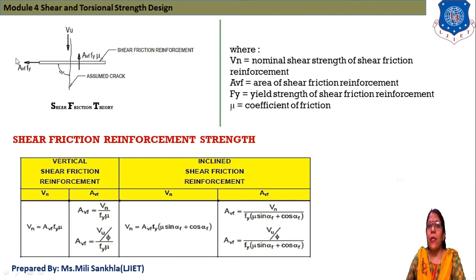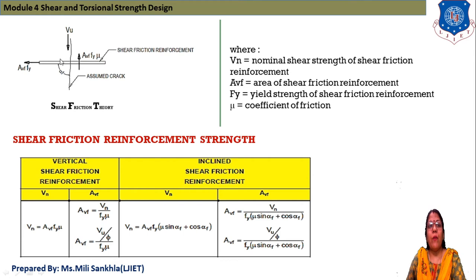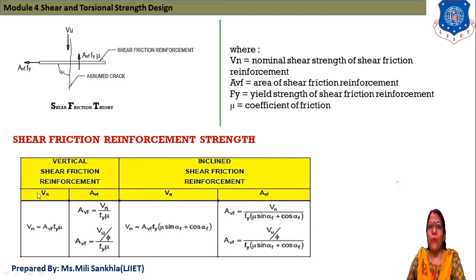The section is subjected to shear force Vf acting downward, and we apply the theory of shear friction reinforcement. Vn is the nominal shear strength of shear friction; Avf is the area of shear friction reinforcement; fy is the yield strength of shear friction reinforcement; and mu is the coefficient of friction. We tabulate vertical and inclined shear friction reinforcement in terms of Vn and Avf.